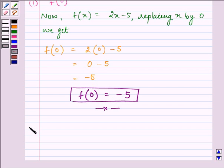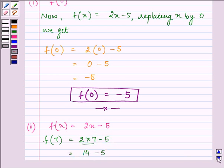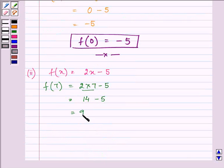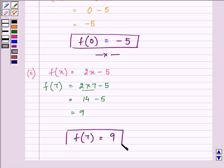Proceeding on with the solution for the second part. Here again f(x) is given to us as 2x - 5 and we need to find the value of f(7). So on replacing x with 7 we have 9. So f(7) value is equal to 9.